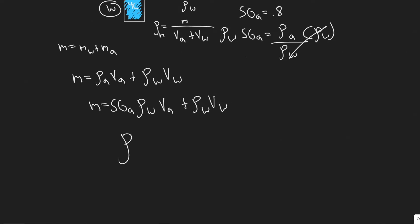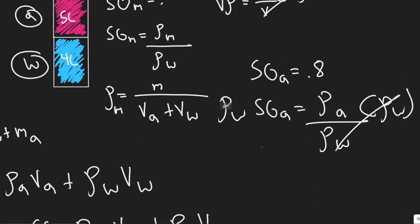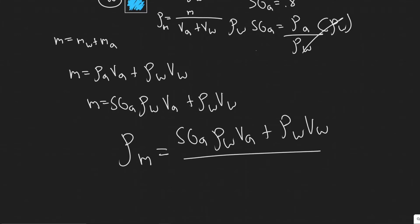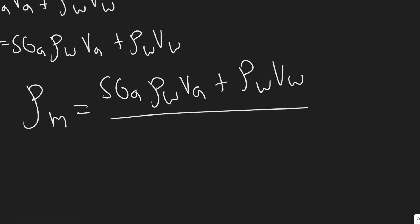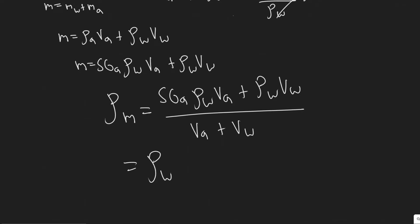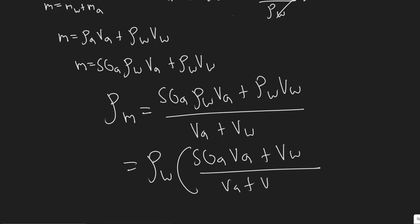The density of the mixture ρ_M equals M divided by (V_A + V_W). Substituting M in, we get: ρ_M = (SG_A × ρ_W × V_A + ρ_W × V_W) / (V_A + V_W). We factor out ρ_W since it appears in both terms: ρ_M = ρ_W × (SG_A × V_A + V_W) / (V_A + V_W).